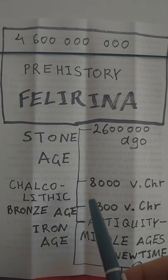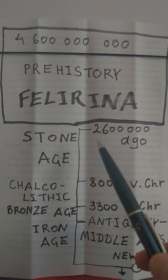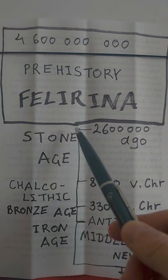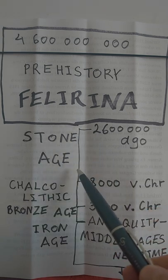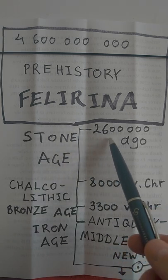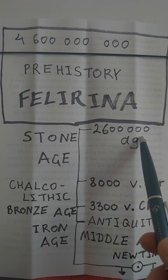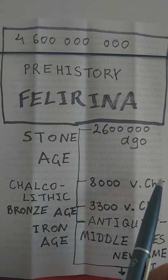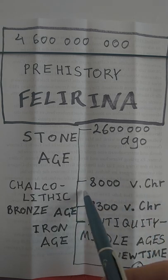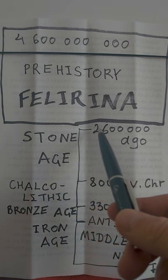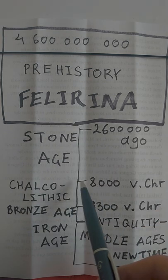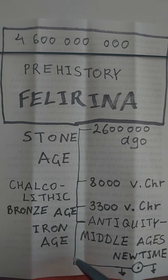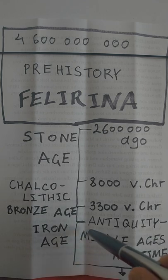The Stone Age is the massive time zone of this period, from about 2.6 million years ago until around 8000 years before Christ. So the people used stones in the Stone Age, copper in the Chalcolithic Age, bronze in the Bronze Age, and iron in the Iron Age.